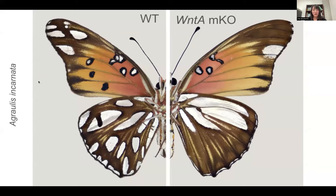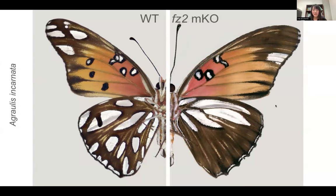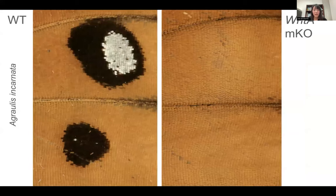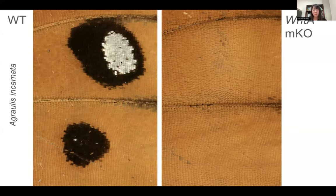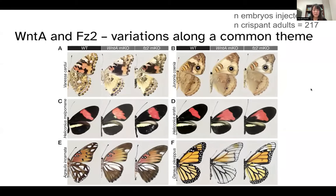Knocking out WNT-A in Agraulis once again removes the spots as previously shown. When we look at Fz2 knockouts, we see very close phenocopying of WNT-A knockouts, suggesting that Fz2 is a receptor of WNT-A. Looking closely at wild-type and knockout adults, the scales are intact — it is a switch in cellular identity, where cells that would normally become orange instead remain black. We see this repeated in six different butterfly species after injecting about 4,000 embryos just for Fz2.